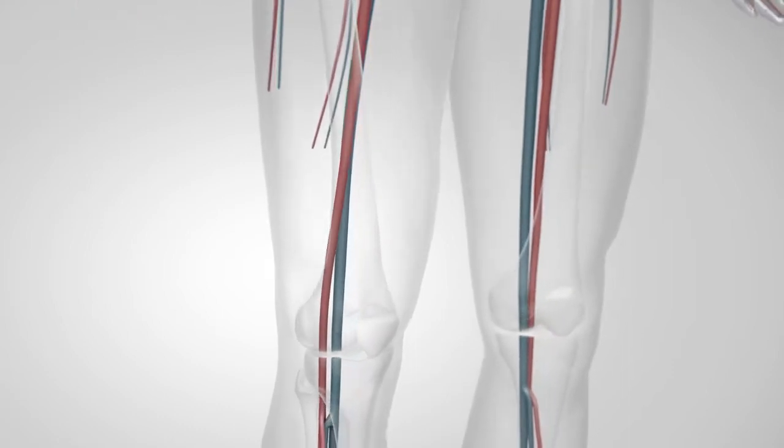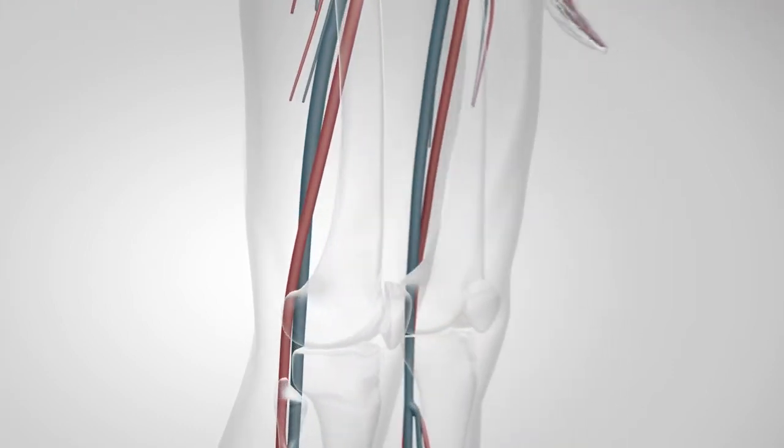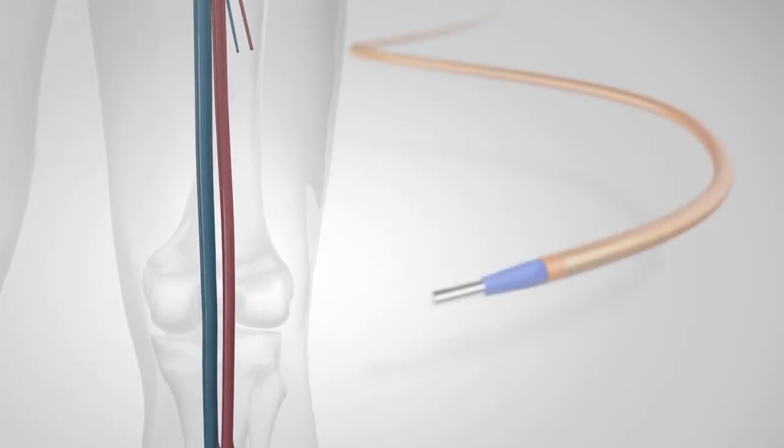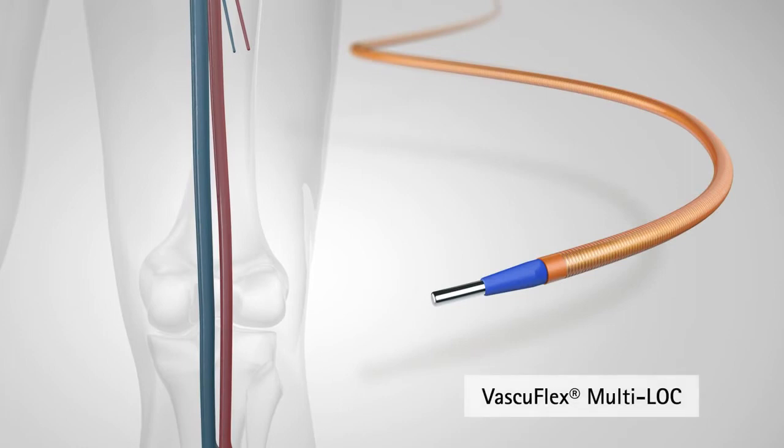Stenting in particular in the proximity of the knee is most challenging due to biomechanical forces acting on the stent. The multiple stent delivery system VascoFlex Multi-Lock is made to handle these challenges. With six short stents mounted on one delivery system, VascoFlex Multi-Lock enables spot stenting only where it is really needed.